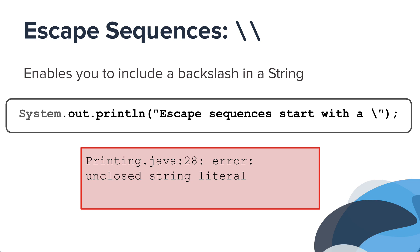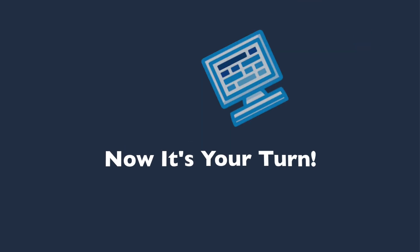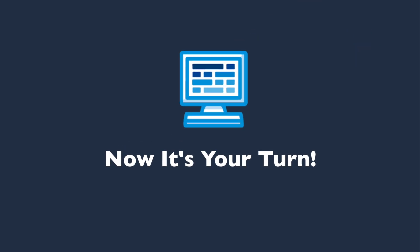If you use only one backslash, the computer expects an escape sequence. So in order to tell Java that you actually want a backslash, you do this with a double backslash. The escape sequence double backslash enables you to include a backslash in a string. Now that you know about printing strings and escape sequences, it's your turn to write your own programs.